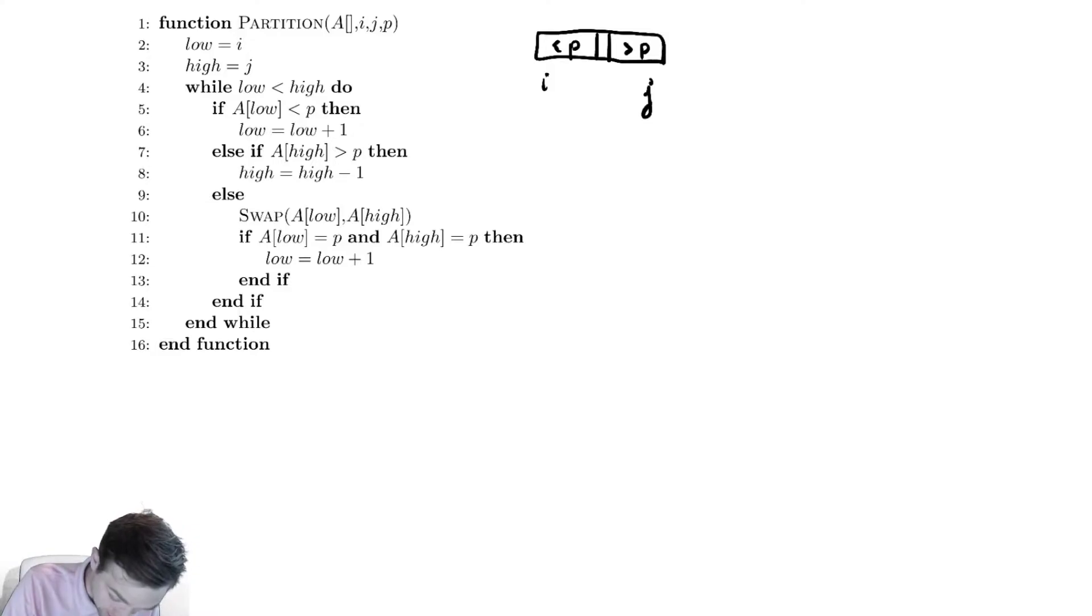In fact, the elements on the left are going to be less than or equal to p, and the elements on the right are going to be greater than p, with p in the middle. So that's the idea. How do we do this?